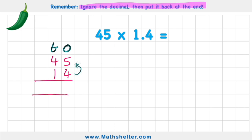Four times five is 20. Put the two ready to be used in the next column, the zero in the ones column. My answer to 4 times 45 is 180.